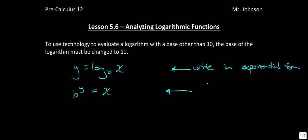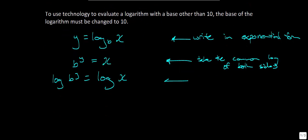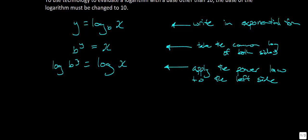Now I'm going to take the common log of both sides. So on both sides of the equation, I take the common log — log base 10 — giving us log(b^y) = log(x). Next I apply the power law to the left side, bringing the y out front, so we have y·log(b) = log(x).